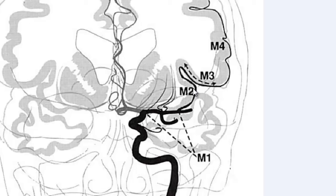Once we have these branches turning into the insular segment, these are referred to as M2, as long as they are heading superiorly in the insular portion. No matter how many branch points we encounter in that insular segment, it's still M2. Once those branches anatomically start to turn inferiorly and move laterally in the sylvian fissure to reach the surface of the cortex, that portion is the M3 segment.